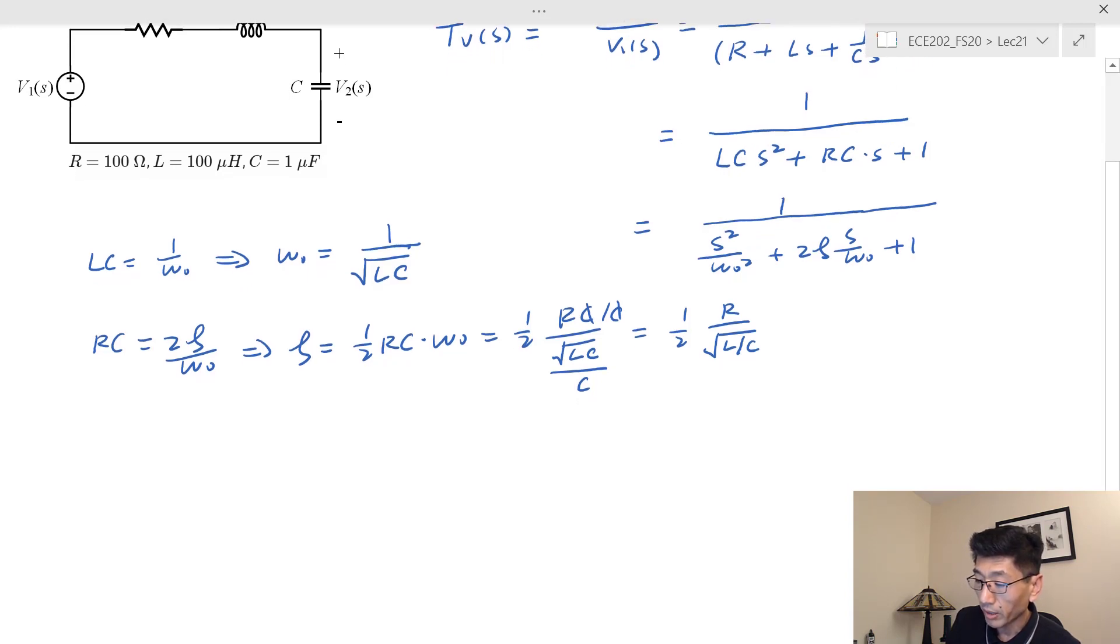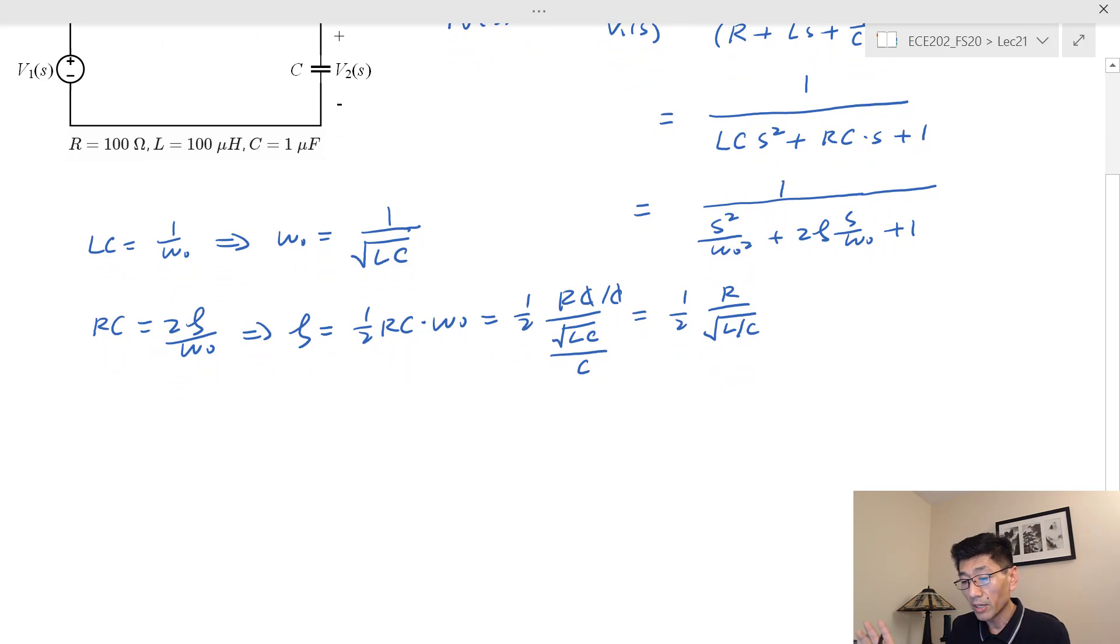Square root of L over C has the unit of ohms, so therefore the zeta does not have any unit. Let's plug in the numbers and see what's the ω₀ so we can draw the three line approximations of the Bode plots. In this problem we have L equals 100 microhenries, so ω₀ equals 1 over square root LC, that's equal to 1 over square root of 100 times 10⁻⁶ and C is 1 microfarad, so that's 1 times 10⁻⁶.